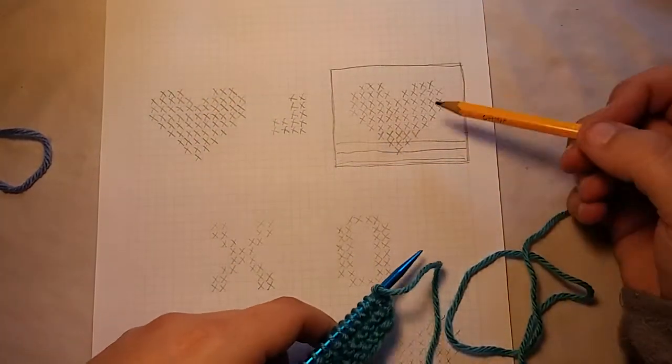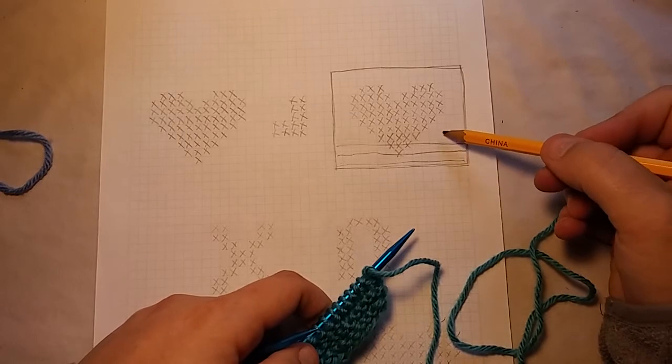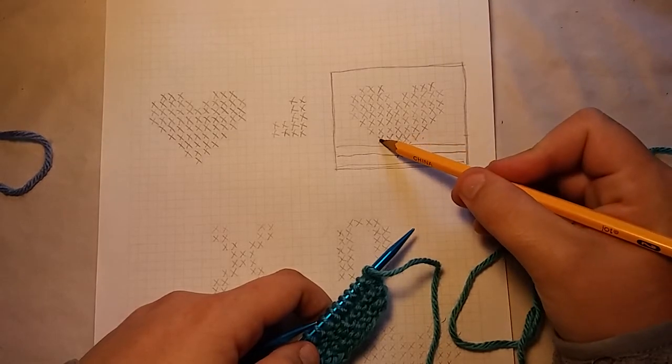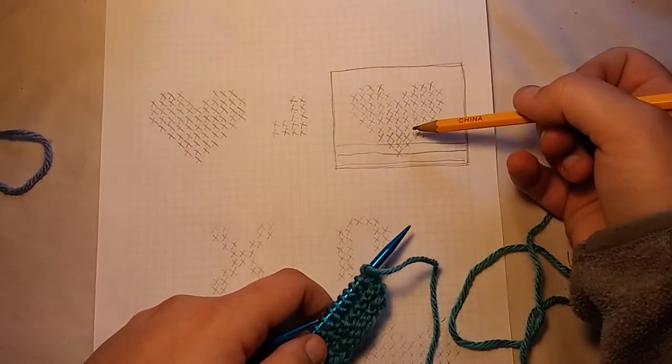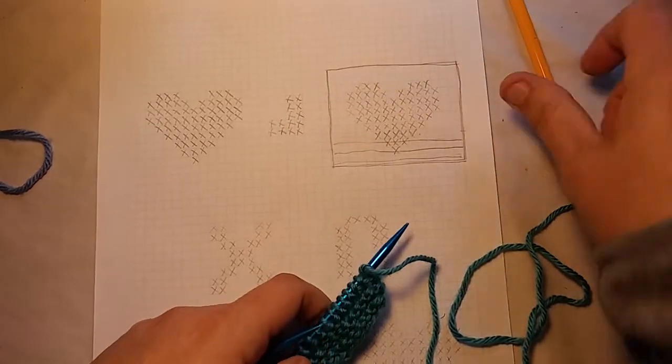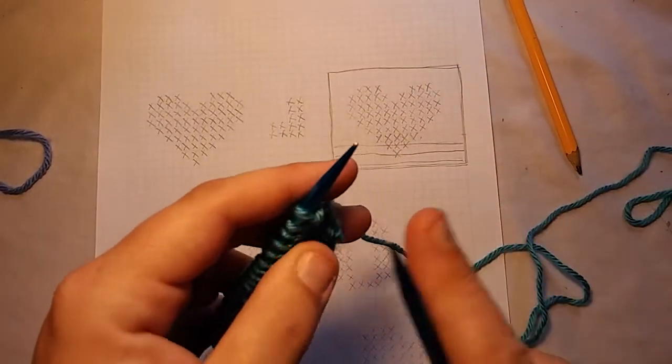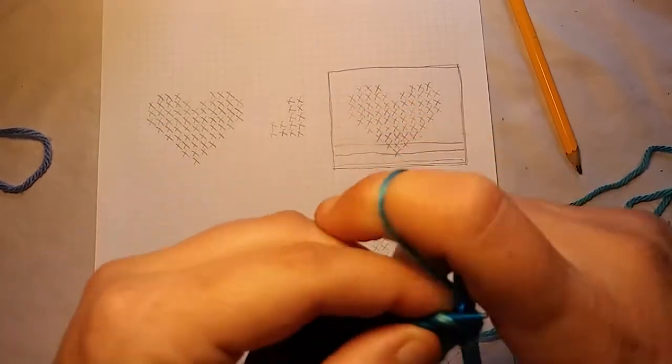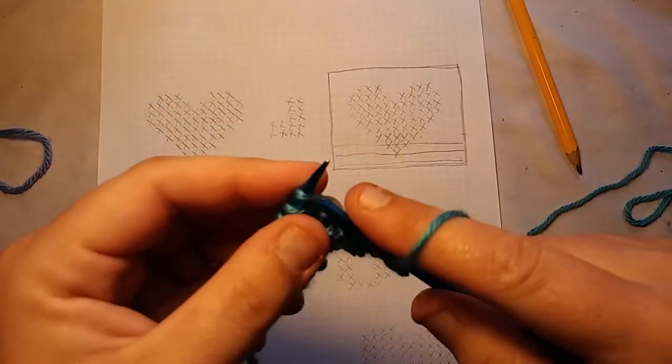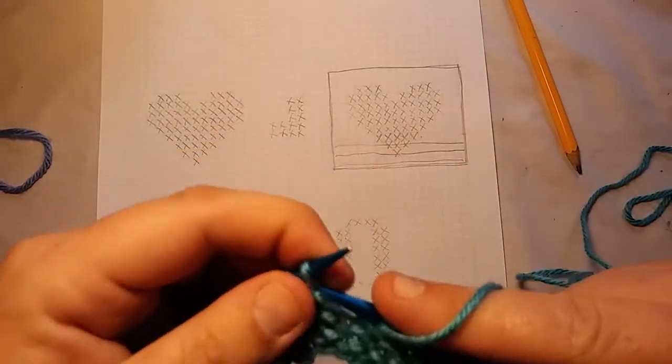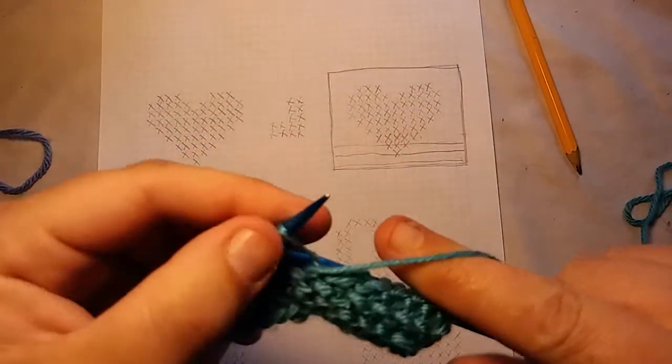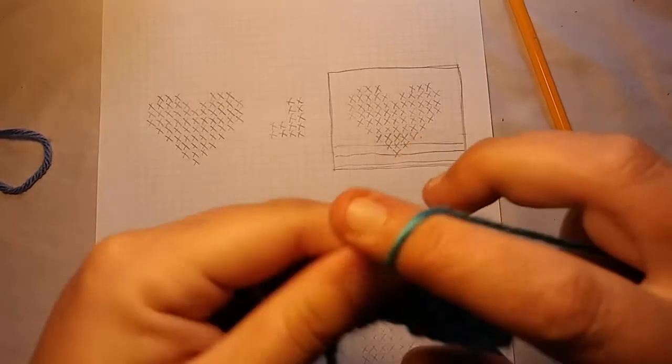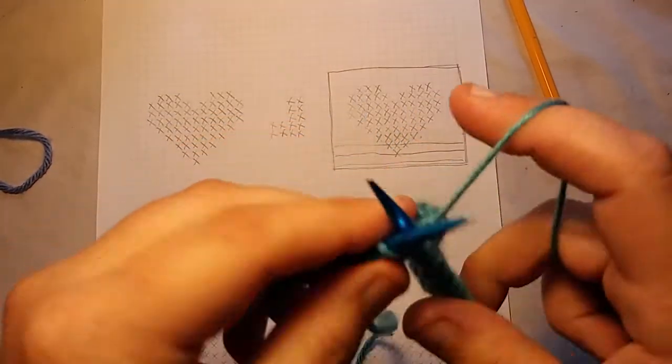I'm back to a purl side or wrong side row. So, I'm going to refer to my chart here. I have one, two, three, four, five. I'm going to knit five. And then I'm going to purl one, two, three, four, five. I'm going to purl five and then knit the rest. So, it's knit five, purl five, knit the remaining. And you can even write this stuff down, too, if you would rather, you know, want to refer to a written pattern. Okay. So, I'm going to knit five. I'm going to purl five. One, two, three, four, five. Now, I'm going to knit the rest.